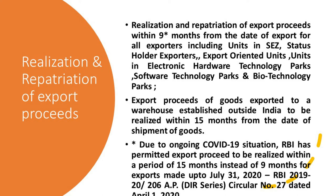Due to the ongoing COVID situation, RBI has permitted export proceeds to be realized within a period of 15 months, not 9 months. So an exporter can realize the export proceeds within 15 months from the date of exports under the COVID-19 situation instead of 9 months, for exports made up to July 31st, 2020. This is as per RBI circular dated 1st April 2020.